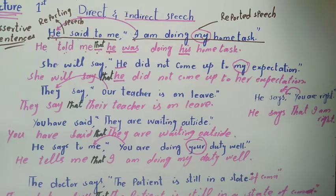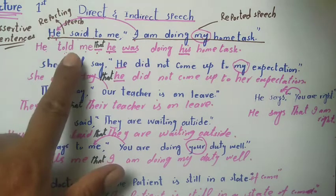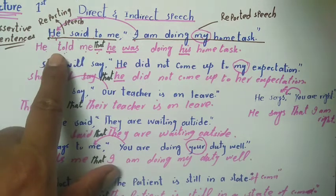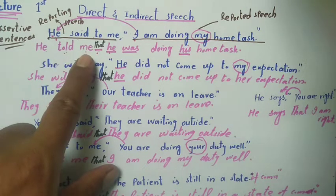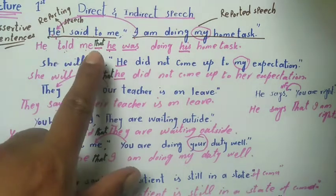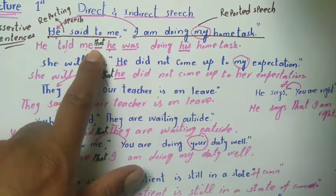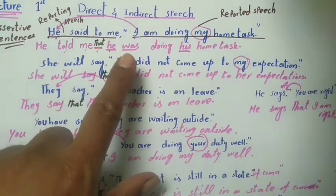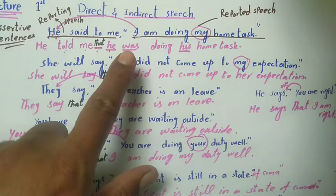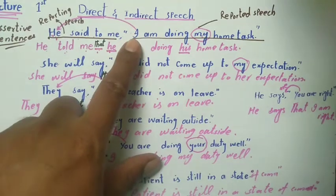Now we convert the first example: 'He said to me, I am drawing my home task.' First, change 'said to me' to 'told me'. Remove the inverted commas and add 'that'. Now check the reported speech subject — 'I' — which person is this? First person.